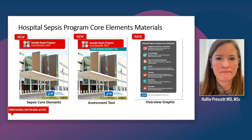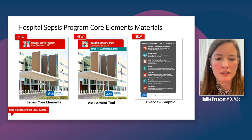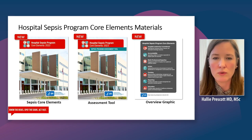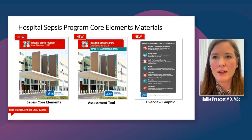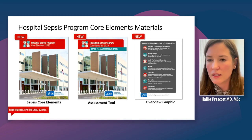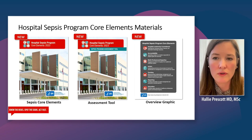The core elements include several documents. There is the core elements document itself, which walks through each core element, provides rationale, and provides examples. Also included is a hospital self-assessment tool that allows you to evaluate the current state of affairs at your hospital and identify areas for next steps. Additionally, there is an overview graphic providing a high-level summary of the seven core elements.